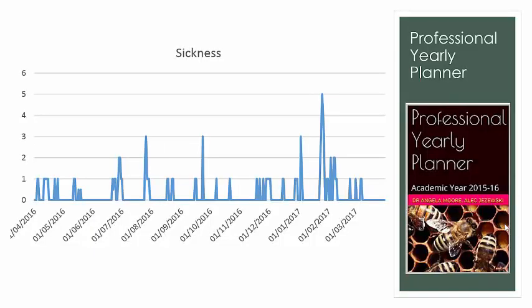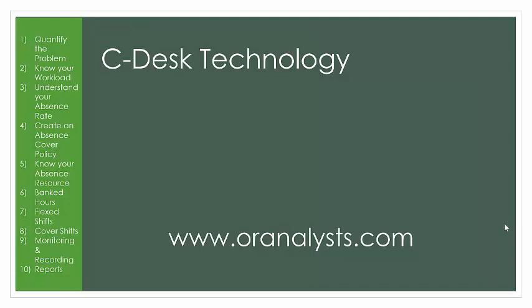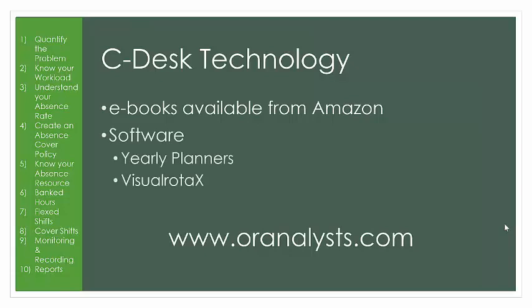Here is a sickness plot from our yearly planners. A simple plot like this means that you can quickly identify where high sickness occurred and if more sickness occurred than was anticipated. If you would like to know more about managing your personnel, our e-books are available now from Amazon. We also have the yearly planners for offices and Visual Roto X for shift workers. We help companies around the world become more effective through better staffing operations. Please visit our website at www.oranalyst.com. Thank you for watching.